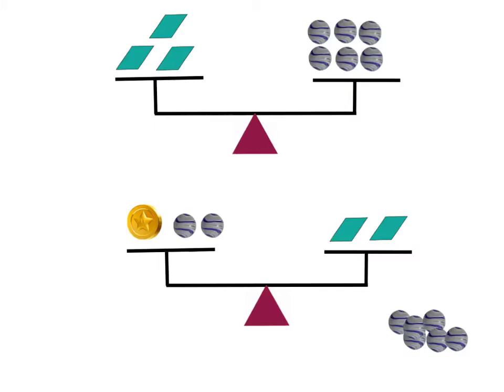We're going to apply the same principle here. As we look at the second pan balance, what I want to figure out is how many marbles is one coin equal to? Well, I don't even have any marbles on this side of the pan balance, so there's no way I can figure this part out. So that's okay — it's a two pan balance problem, so we're going to solve the first one first. First I need to figure out how many parallelograms is equal to how many marbles.